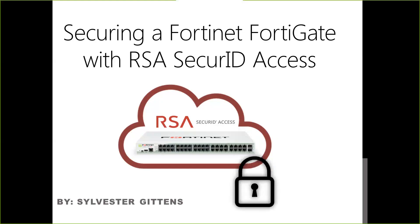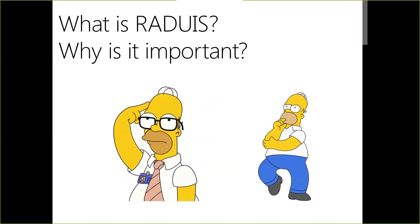I'd like to keep them short. Again, they're locking down and securing FortiGate with SecureID Access. But before I get into what that is, what is RADIUS and why is it important? Remote Access Dial-In User Service is a client-server protocol software that enables remote access servers to communicate with a central server. In everyday terms, we're going to be allowing remote users access to internal company resources, but doing it a little bit more secure by adding multi-factor authentication.